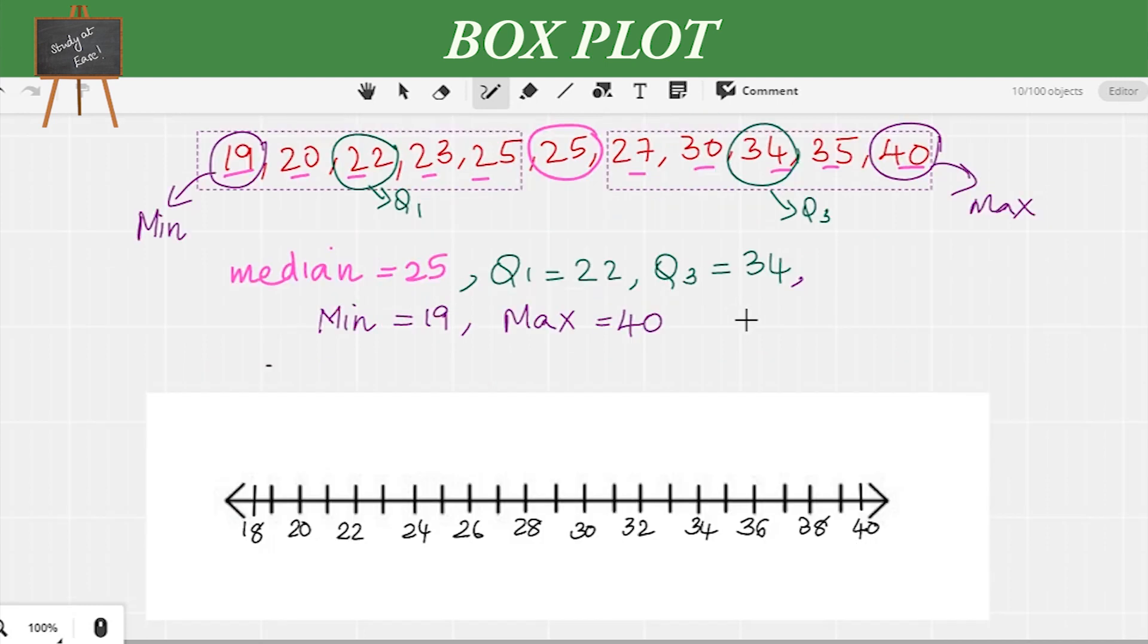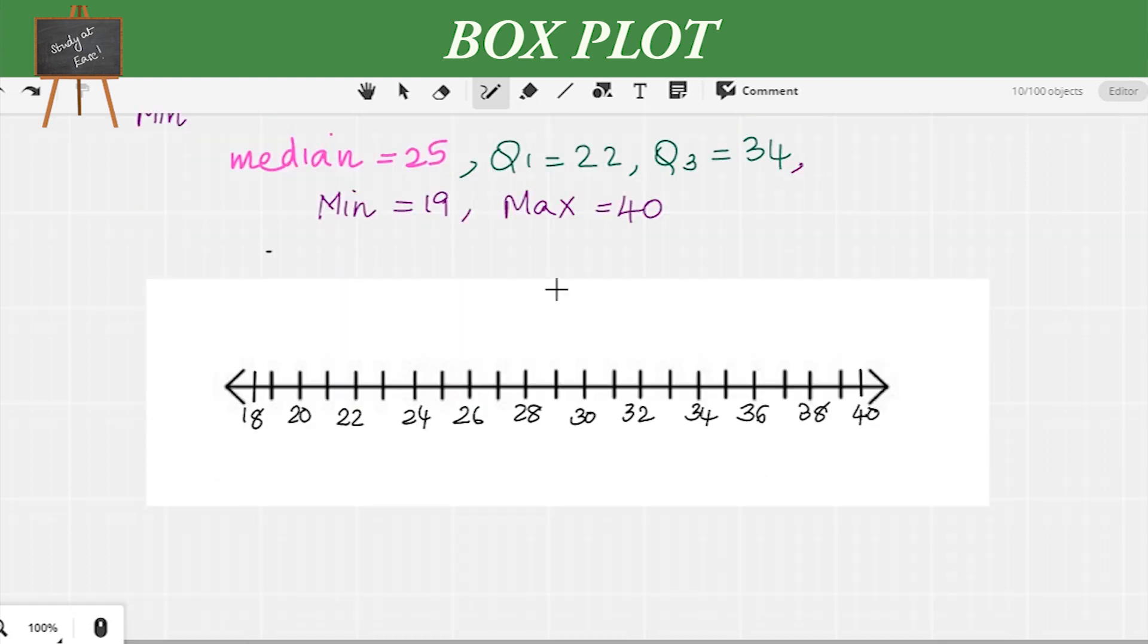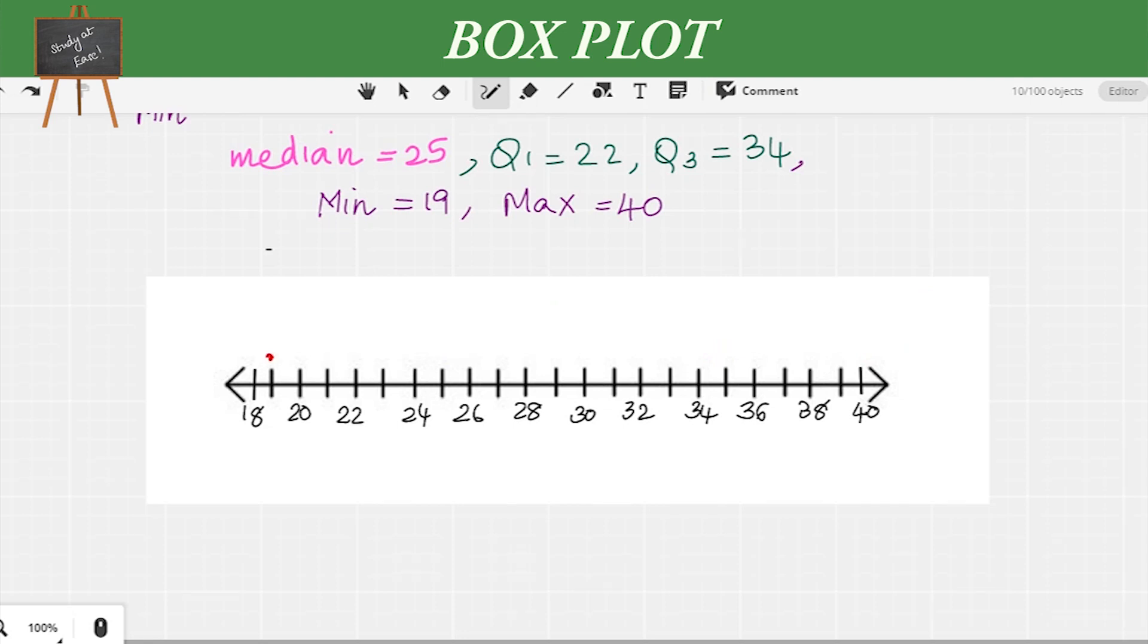Here we have a number line and I'm going to show you how to make a box plot. All the values we found—minimum, maximum, median, Q1, Q3—we mark them on the number line. The minimum is 19, maximum is 40, median is 25, Q1 is 22, and Q3 is 34. We have marked all the information.